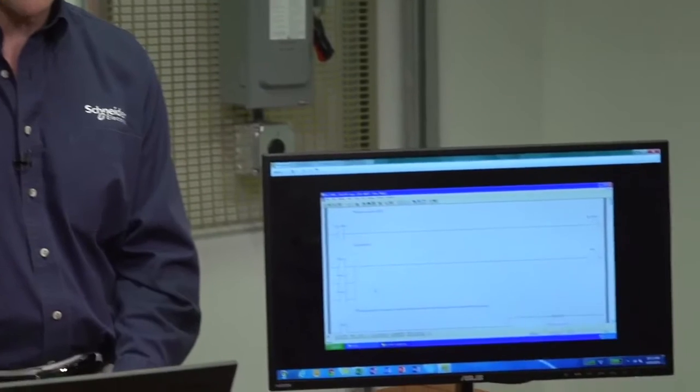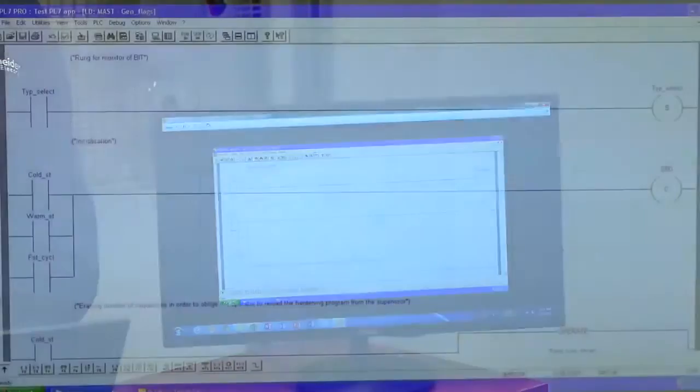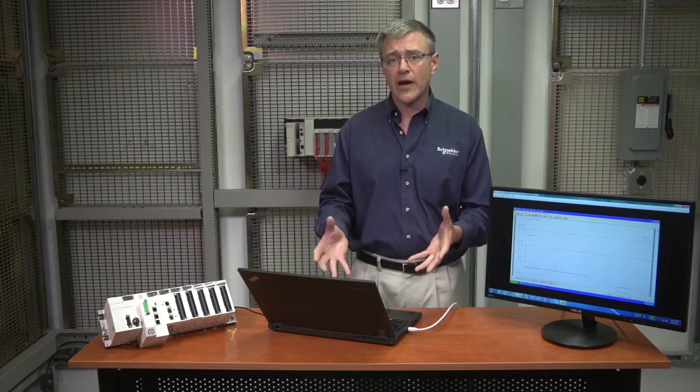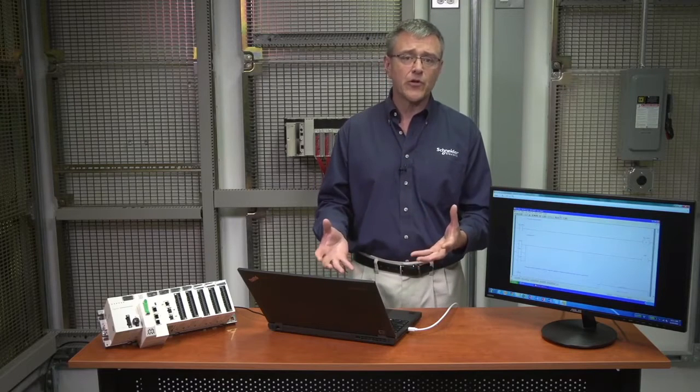Let's take a look at the PL7 software, which is the obsolete software that you've used to program your premium processor. In the PL7 software, you can see we've got run comments, we've got symbol names, and all of that intellectual property is really part of your application. It's what your maintenance people are used to.